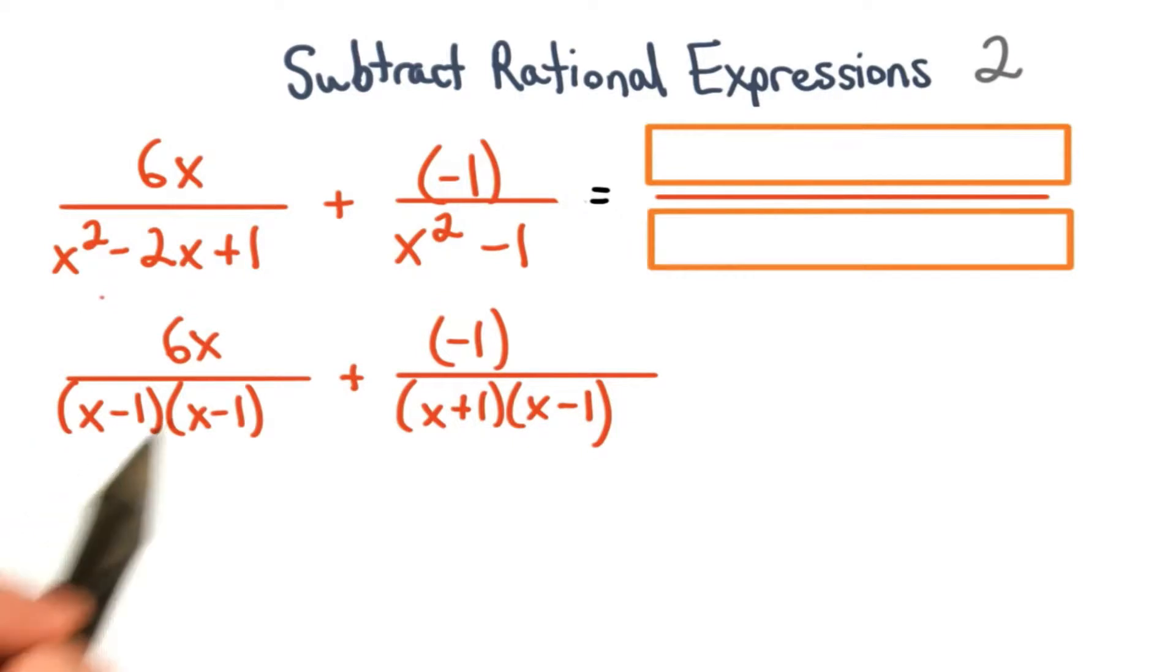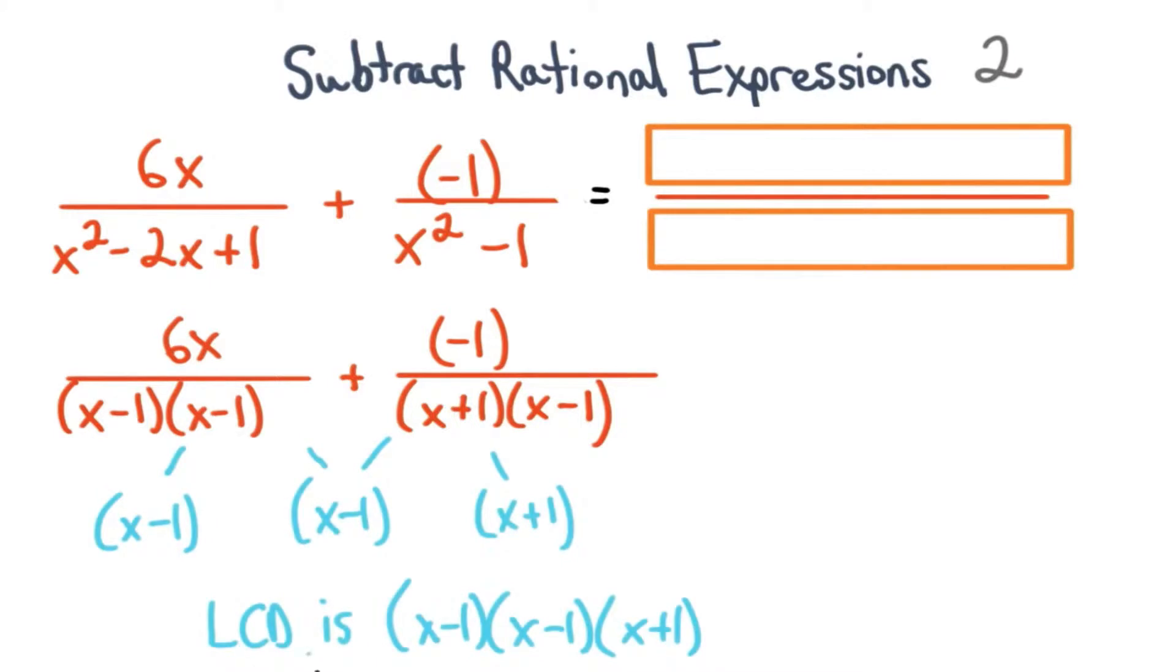Now we factor each denominator and try to find the lowest common denominator between the two fractions. The lowest common denominator is x minus 1 times x minus 1 times x plus 1. We know this since these two denominators share a common factor of x minus 1. The other factor for this denominator is x minus 1, and the other factor for this denominator is x plus 1.